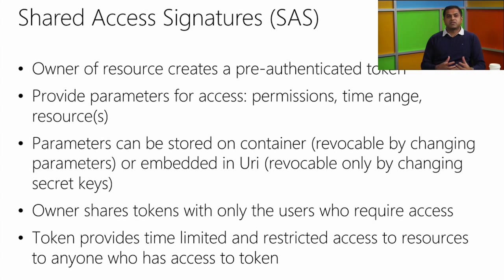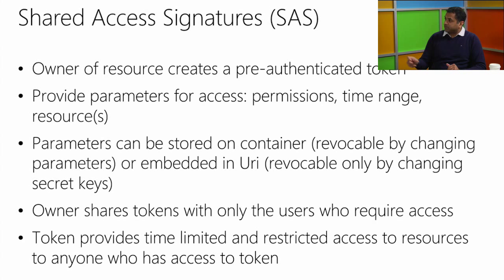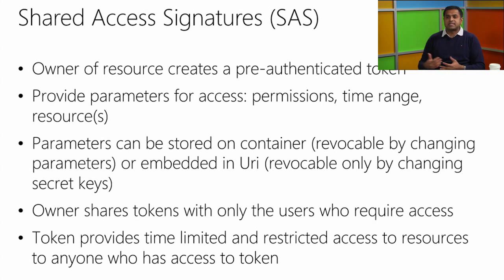There are multiple ways to create a SAS token. You can store the parameters on the container or table, which allows you to revoke access by changing or deleting those parameters. Or you can embed them in the URI, in which case if you've given the token out with unlimited time access, that access can only be revoked by changing your secret key — the two 512-bit keys visible in your portal.